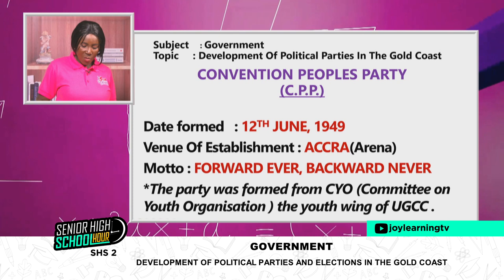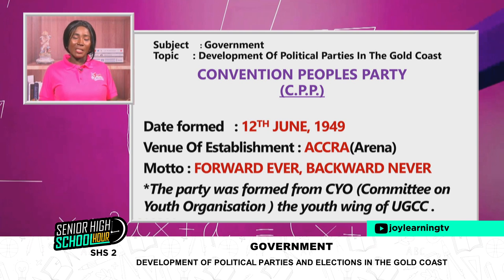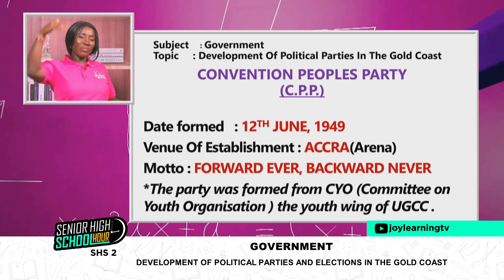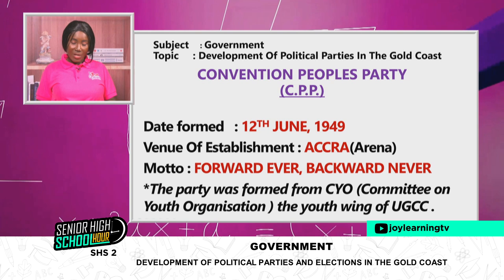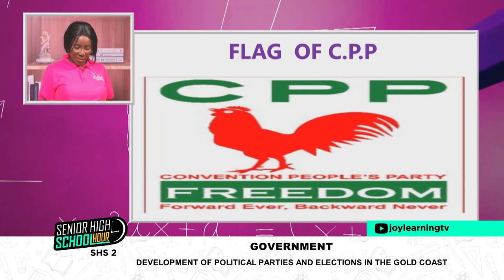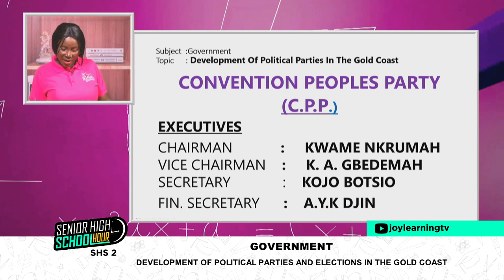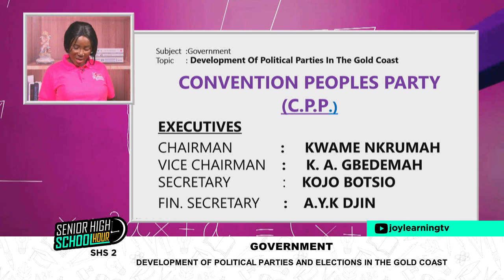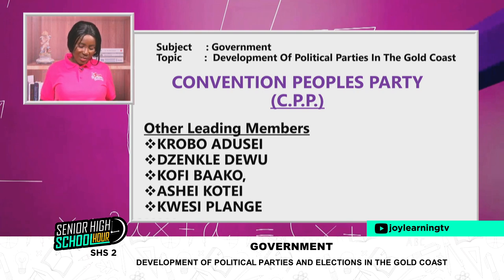The Convention People's Party — CPP — was formed on the 12th of June 1949 at Arena in Accra. Their motto was forward ever, backwards never. The CPP was formed by Dr. Kwame Nkrumah. Vice Chairman was K.A. Gbedema, Secretary was Kojo Botsio, Financial Secretary was A.Y.K. Djin. Other leading members were Krobo Edusei, John Kludze, Kofi Baako, Ashe Kotei, and Kwesi Plange.